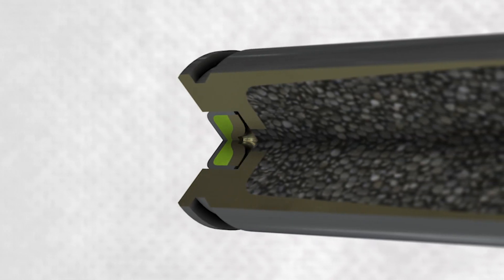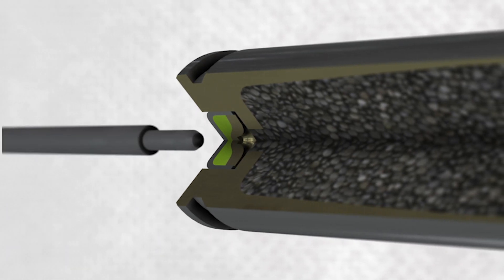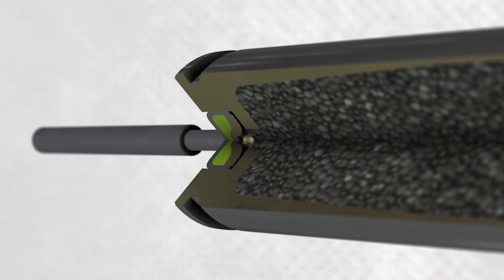The primer is placed in the center of the case head and is ignited when the firing pin strikes the primer, forming a spark between the cup and the anvil.